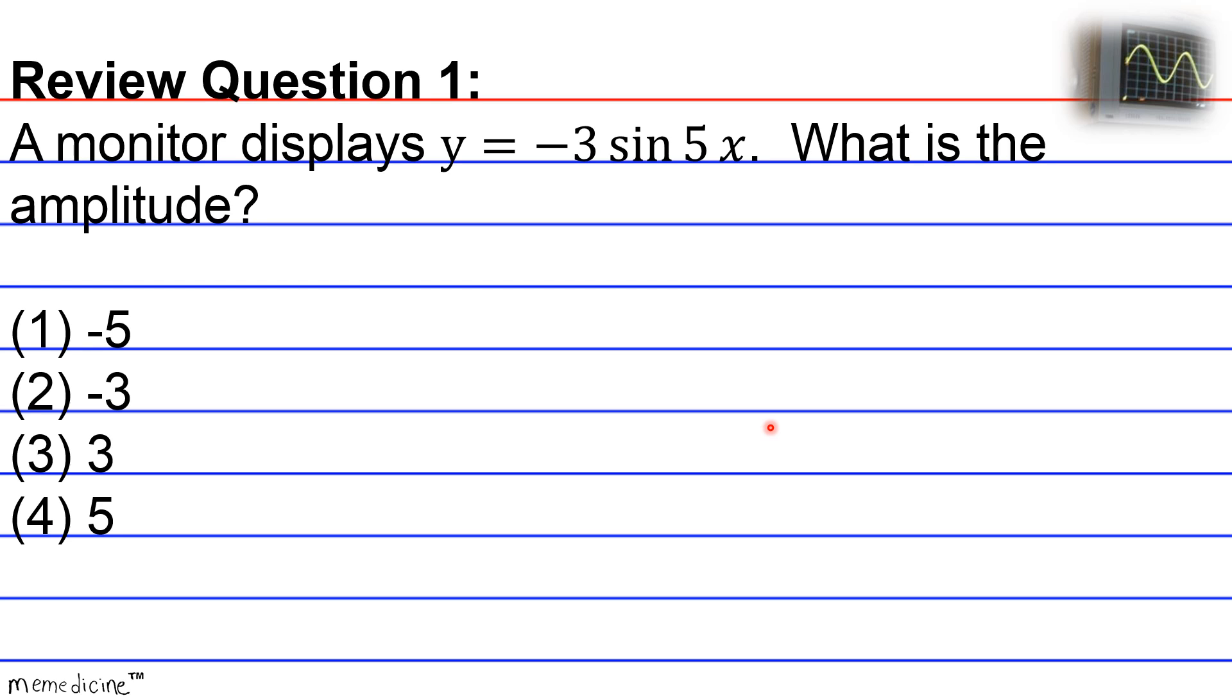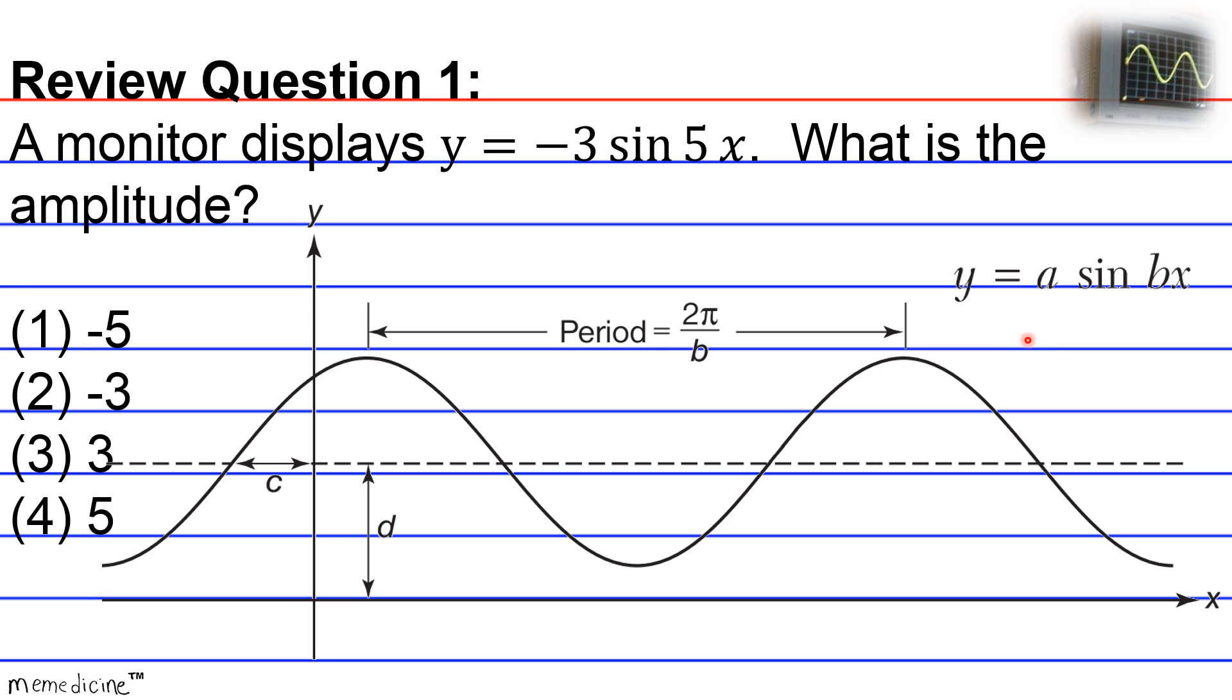Okay, so the equation Y is equivalent to negative 3 sine of 5X is of the format Y is equivalent to A sine of BX, where A is going to be the amplitude.